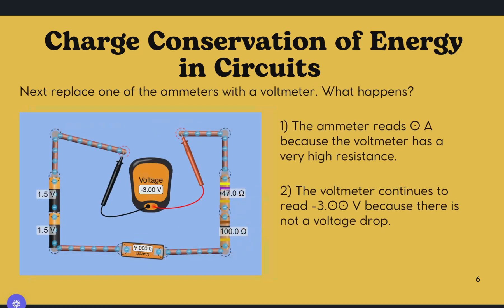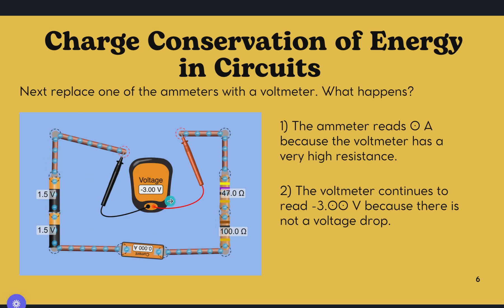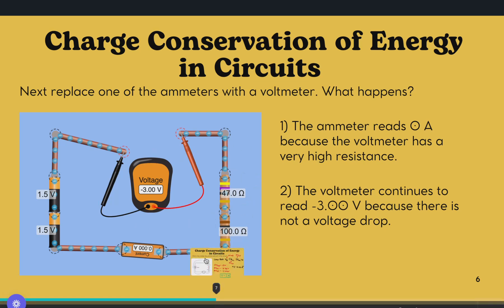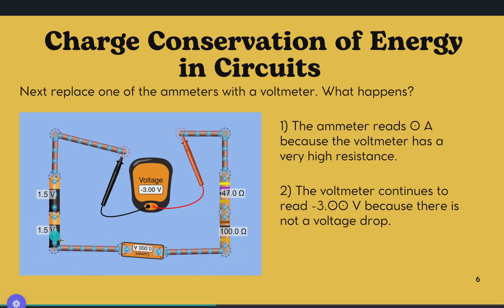If we replace one of the ammeters with a voltmeter, the ammeter reads 0 amperes, because the voltmeter has a very high resistance, so most of the charge coming through the batteries up into the voltmeter gets stuck and stopped — it's not making its way to the resistors and down to the ammeter. And even if there is a little charge making it to the resistors, it's definitely going to be stopped by them. The voltmeter continues to read negative 3 volts, because there is no voltage drop — all the voltage from the batteries is going into the voltmeter.